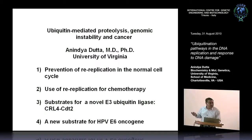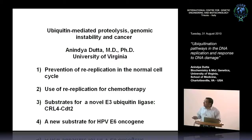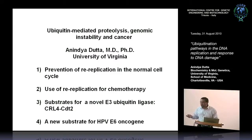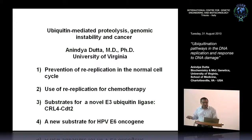What I'll tell you about is prevention of re-replication in the normal cell cycle, mostly in summary form. I'll show you about a new venture about how re-replication causes so much DNA damage that it actually could be a mode of chemotherapy. In the process, we started focusing on this new E3 ligase, CRL4-CDT2, and we'll discuss two novel substrates for this ligase. At the end, I'll mention a new substrate for the HPV E6 oncogene — bringing coals to Newcastle, but interesting nonetheless.